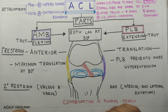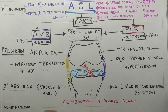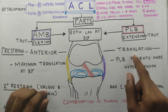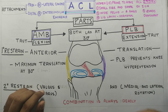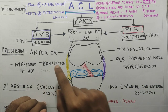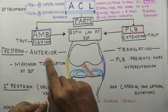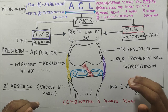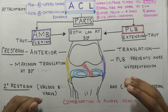Now that we have learned about the primary and secondary restraint, let us discuss the mechanism of injury. Obviously, anterior translation will cause a lot of strain on the ACL and can lead to a tear. But when there is a combination of movements — that is anterior translation with valgus and medial rotation — it is a deadly combination and the ACL often gets injured in such conditions.